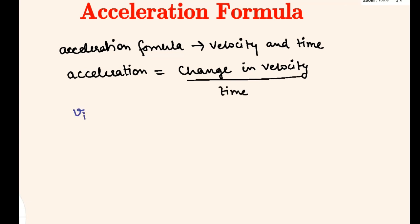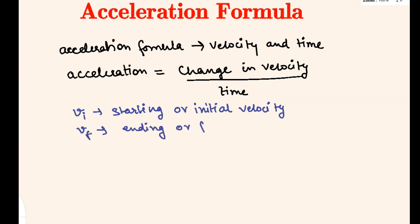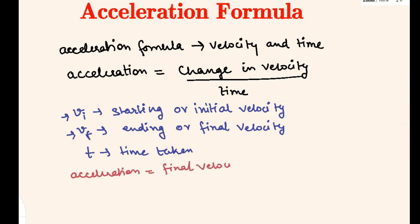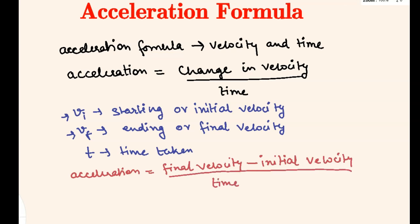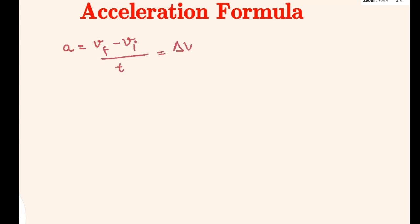Now, if vi is the initial velocity, vf is the final velocity, and t is the time taken to reach the final velocity from the initial velocity, then acceleration a equals vf minus vi divided by t, which again equals delta v divided by t. So we have the formulas: a = (vf − vi) / t, or equivalently a = Δv / t.